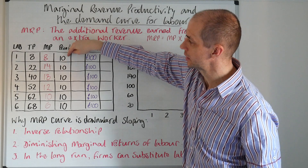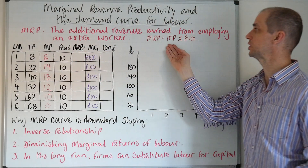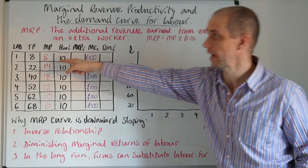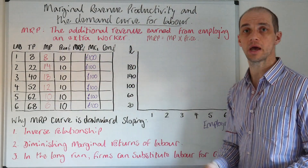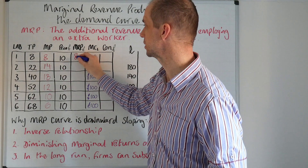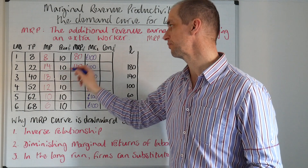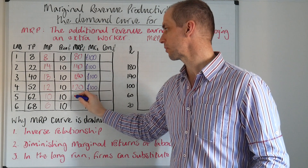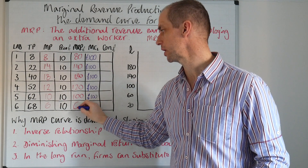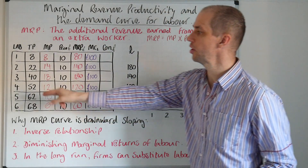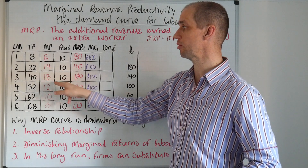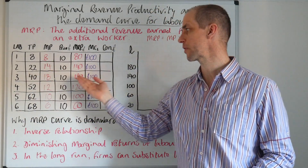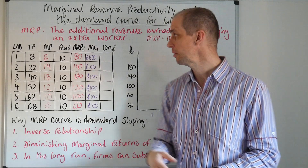We've got this price of £10, so we can now work out our marginal revenue product: marginal product times price. So eight times ten is 80; the next one is 140; then 180; then 120; then 100; and finally just 60. We can see that the third worker really increases output, and his or her additional marginal product means that third worker is well worth their money — we'll test that in just a second.